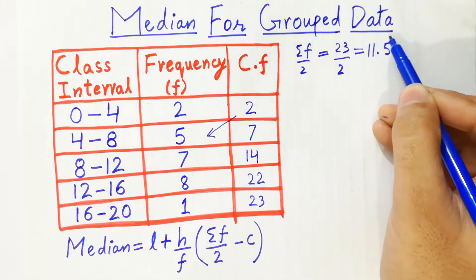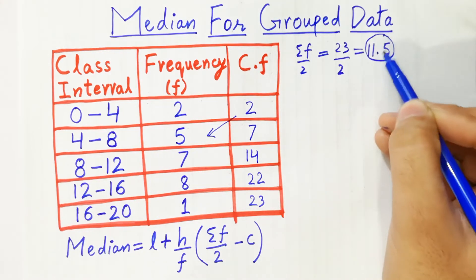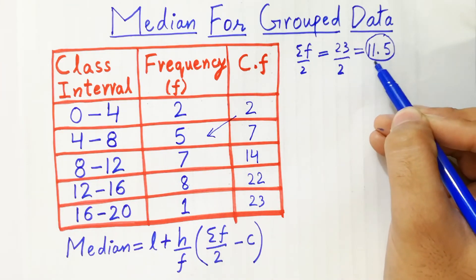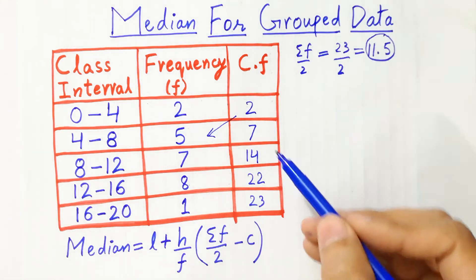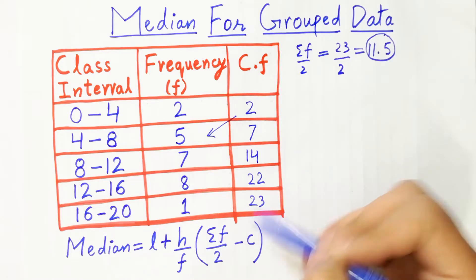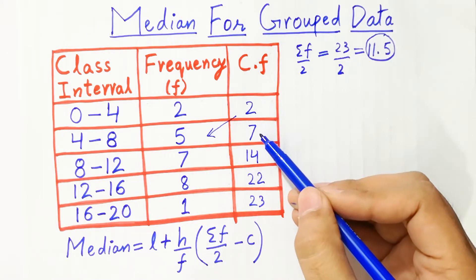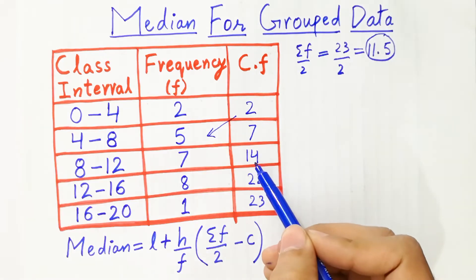This value shows where our median value is. So here you can check the cumulative frequency: 2, 7, the 11.5 value will fall in this interval of 14.